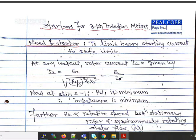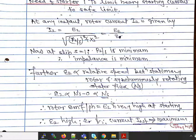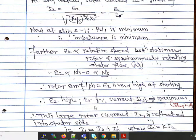At any instant the rotor current i2 = e2 / √[(r2/s)² + x2²] = e2 / Zr. At the time of starting, slip s = 1, so r2/s becomes minimum and impedance Zr becomes minimum. Furthermore, the rotor induced EMF at starting is directly proportional to the relative speed between the stationary rotor and the synchronously rotating stator flux. Since rotor speed is zero at starting, the rotor induced EMF e2 is very large, and with Zr at minimum, the starting current is very high.